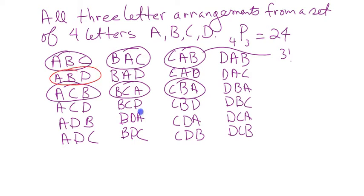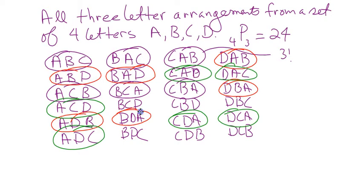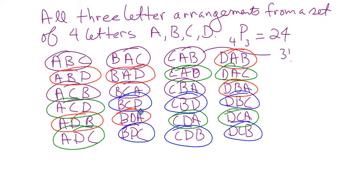So if we don't care about what order they're drawn in, how many arrangements do we have? Let's look at the ABDs, ACDs, and CBDs as groups. There are only four colors — four ways of choosing three letters from a group of four letters if we don't care about the order.